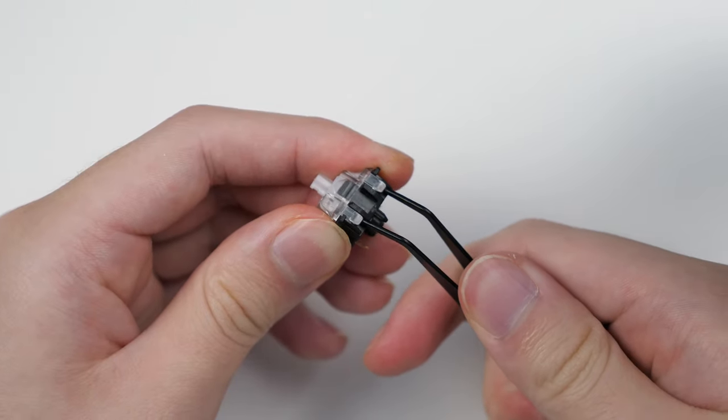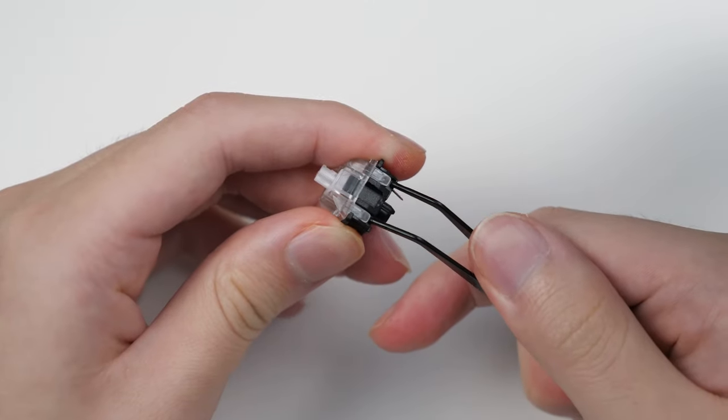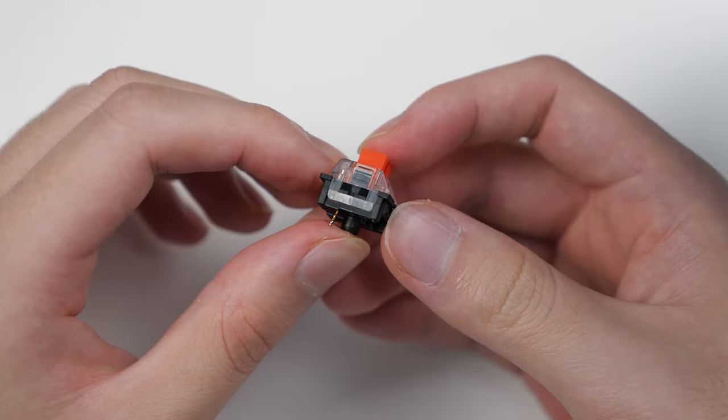You can also use blunt tweezers to open up the switch, which I prefer because it requires less strength and most people have tweezers than small screwdrivers. For Kale and Otemu style switches, the bracket is completely different.